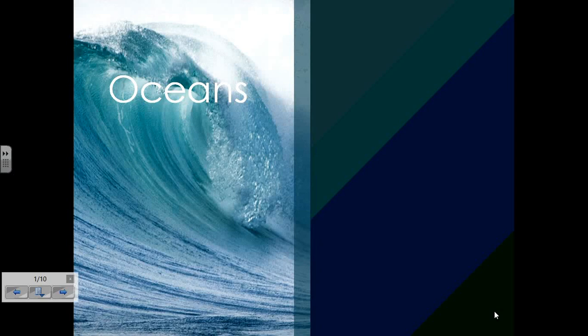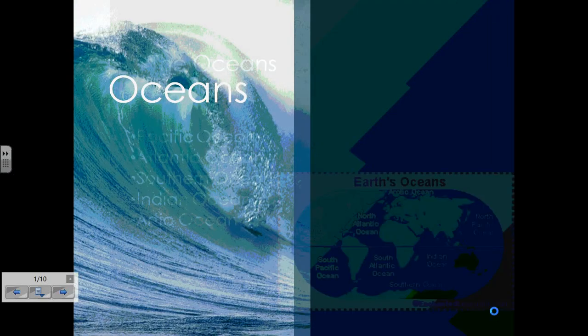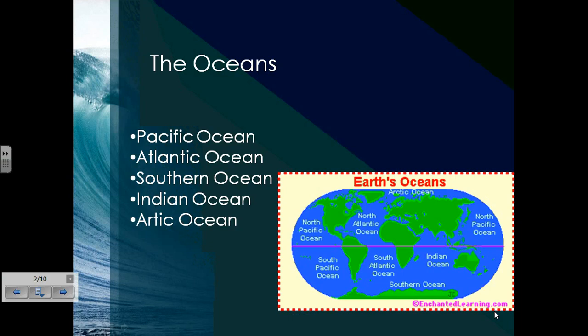Hey, today we're going to talk about oceans and water distribution. There are five oceans on Earth. They are the Pacific Ocean, the Atlantic Ocean, the Southern Ocean, the Indian Ocean, and the Arctic Ocean. Take a minute to look at the globe or the map provided and get an idea of where those oceans are located.